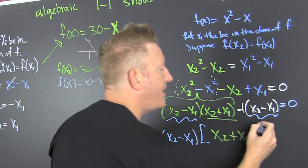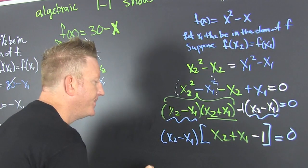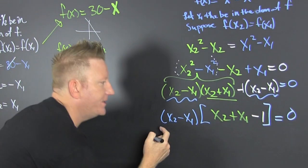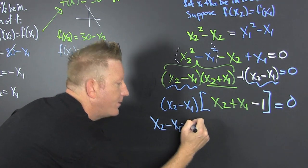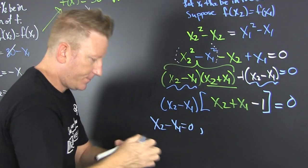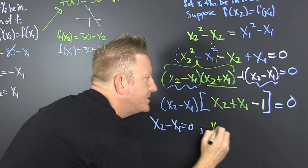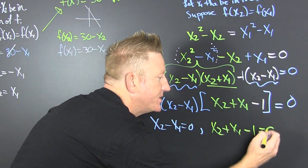So what I have is I have a product, and that product's equal to zero. So I'm probably running out of room. Oh, no, I'm still good. So then I have an x2 minus an x1 is equal to zero. Okay. And I have that x2 plus x1 minus that one is equal to zero.